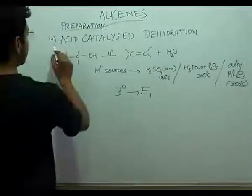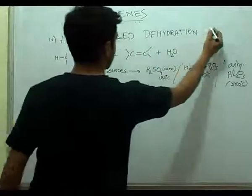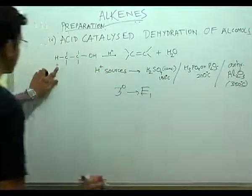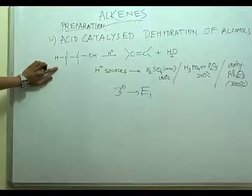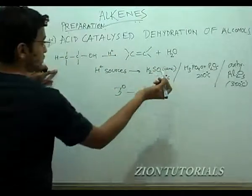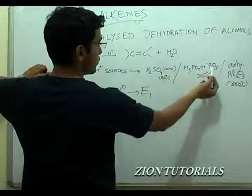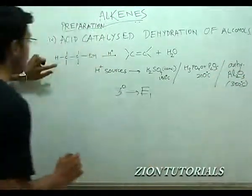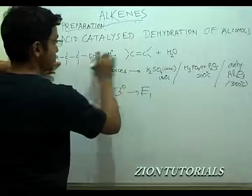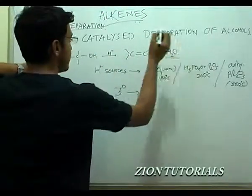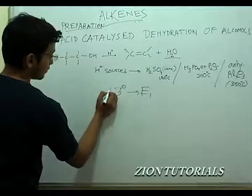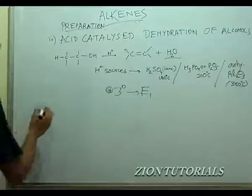The fourth method is acid-catalyzed dehydration of alcohol. A simple alcohol is dehydrated in the presence of an acid such as concentrated H2SO4, H3PO4, P2O5, or anhydrous alumina. In the presence of H⁺ ions, the OH group is removed as H2O and an alkene is formed. Let us look at the mechanism.